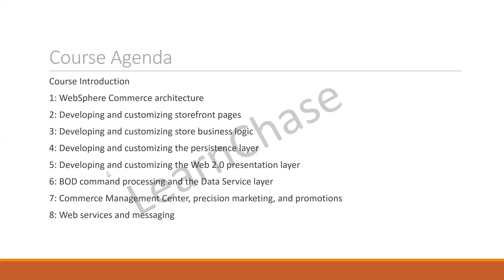Feature Pack 6 contains improved capabilities to help ensure the most relevant products are offered when shoppers conduct a search, and the ability to better target shoppers with recommendations based on their current search or navigation point. Feature Pack 7 contains IBM Commerce Composer for WebSphere Commerce, Advanced WYSIWYG HTML editor, prebuilt integration with IBM Web Content Manager, and improved site search performance.